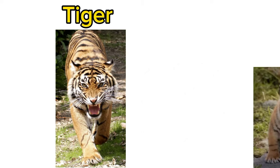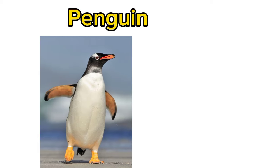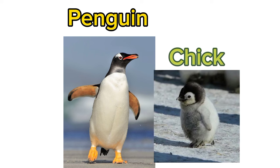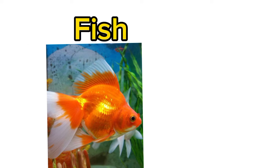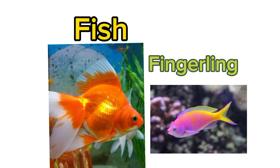Tiger. Cub. Baby tiger is called Cub. Penguin. Chick. Baby fish is called Fingerling.